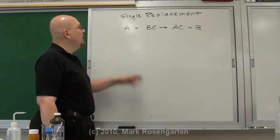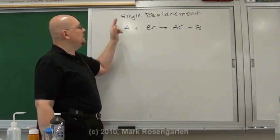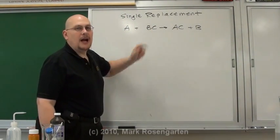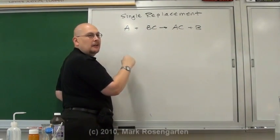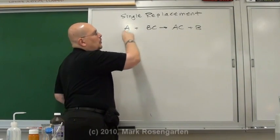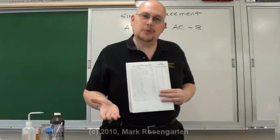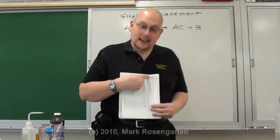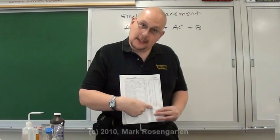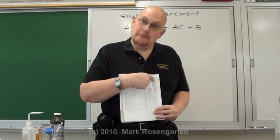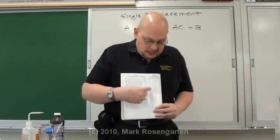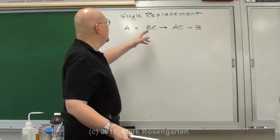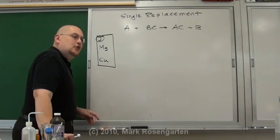In a single replacement reaction, an active element replaces a less active element that's already bonded in a compound. A more active metal will replace a less active metal. A more active nonmetal will replace a less active nonmetal. You can tell which metal or nonmetal is more reactive by going to reference table J. Reference table J lists metals from most active to least active, and nonmetals from most active to least active.